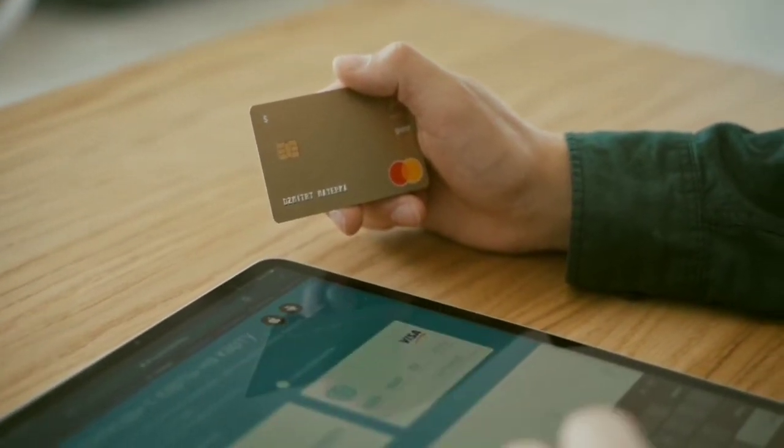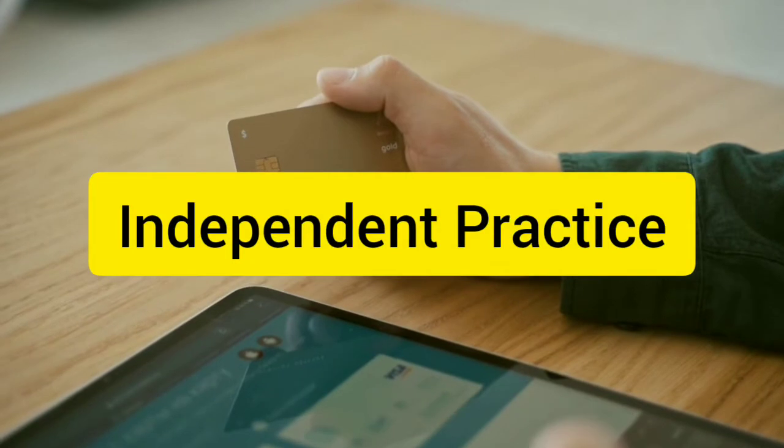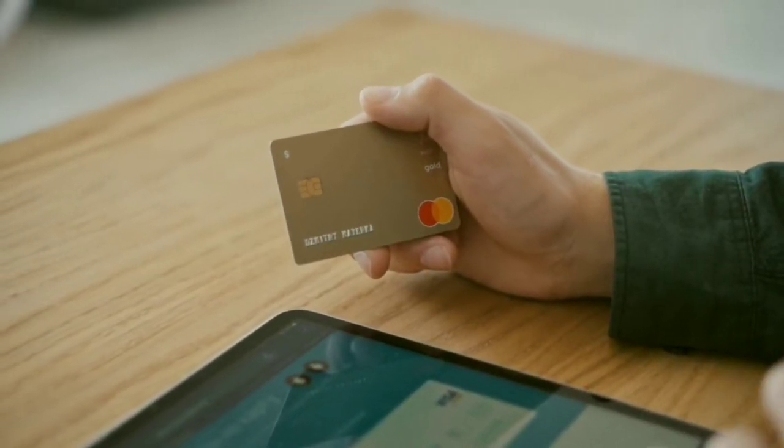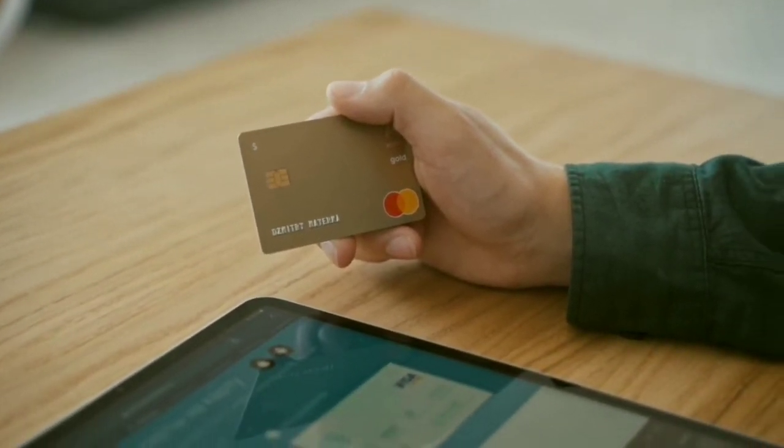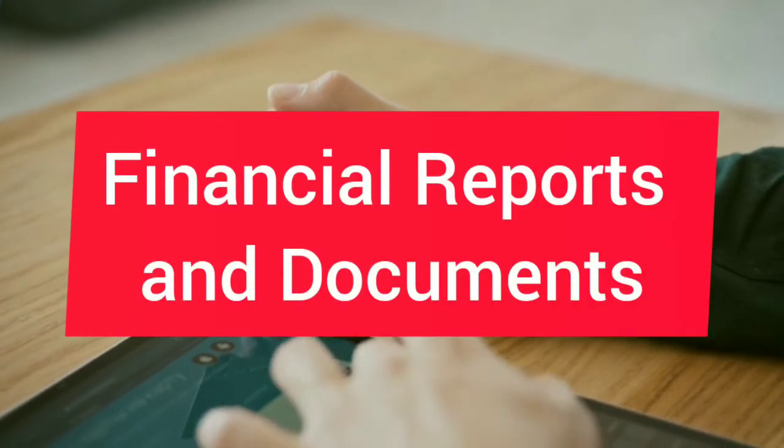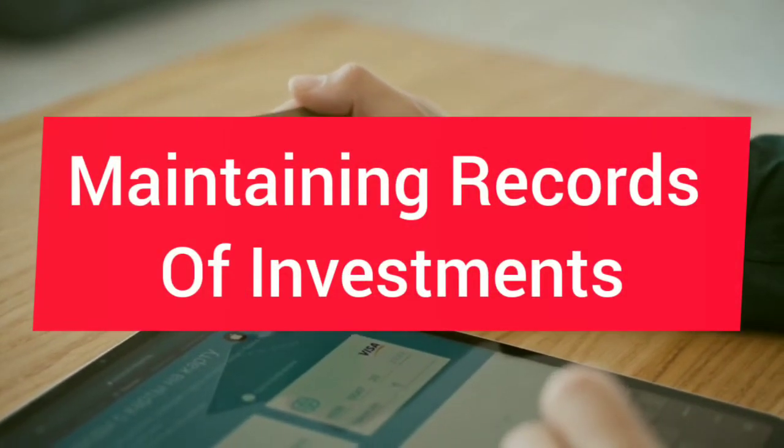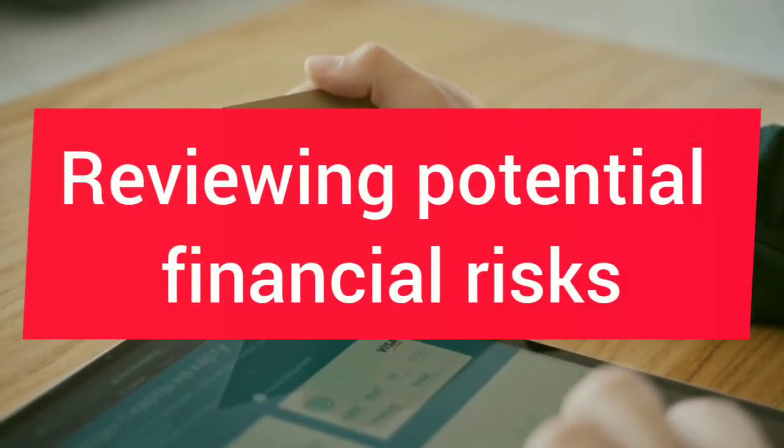Once accredited as a CA, you can either go for independent practice or join an organization. His or her responsibilities will include preparing financial reports and documents, maintaining records of investments, reviewing potential financial risks, etc.